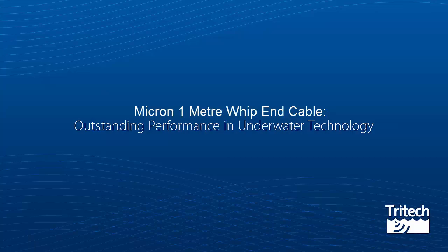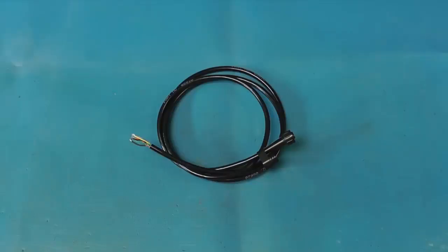Micron 1m Whip End Cable. For standalone applications, the Micron Echo Sounder is supplied with a single-ended 1m Whip End Cable. For use with the Micron Sonar, an additional double-ended Micron Cable is required.